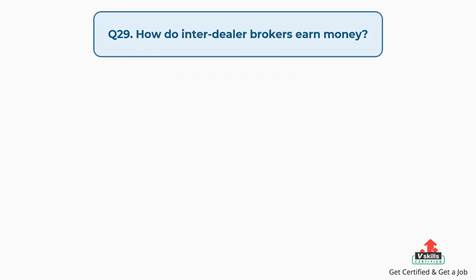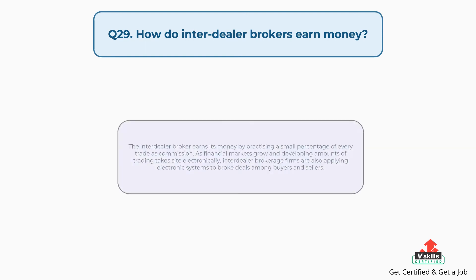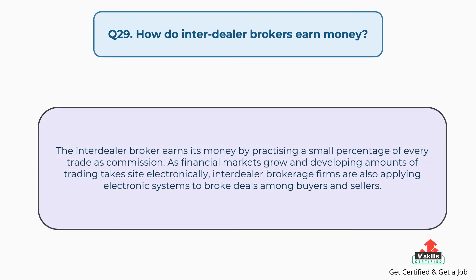Question number twenty-nine: how do interdealer brokers earn money? The answer is, the interdealer broker earns its money by taking a small percentage of every trade as commission. As financial markets grow and increasing amounts of trading take place electronically, interdealer brokerage firms are also applying electronic systems to broker deals among buyers and sellers.